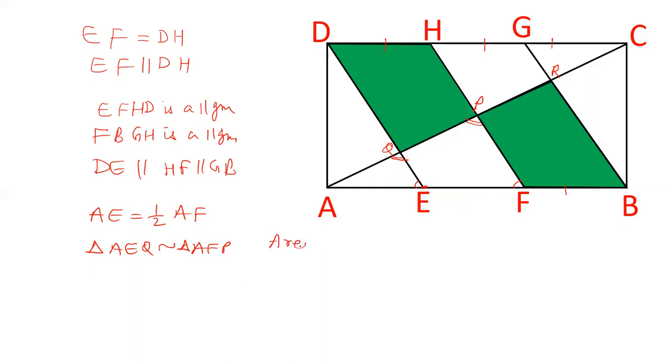So area of triangle AEQ upon area of triangle AFP is equal to AE squared upon AF squared and as AE is half of AF, so it will become (1/2 AF)² upon AF². That is 1/4 AF² upon AF² which cancels out to 1/4.